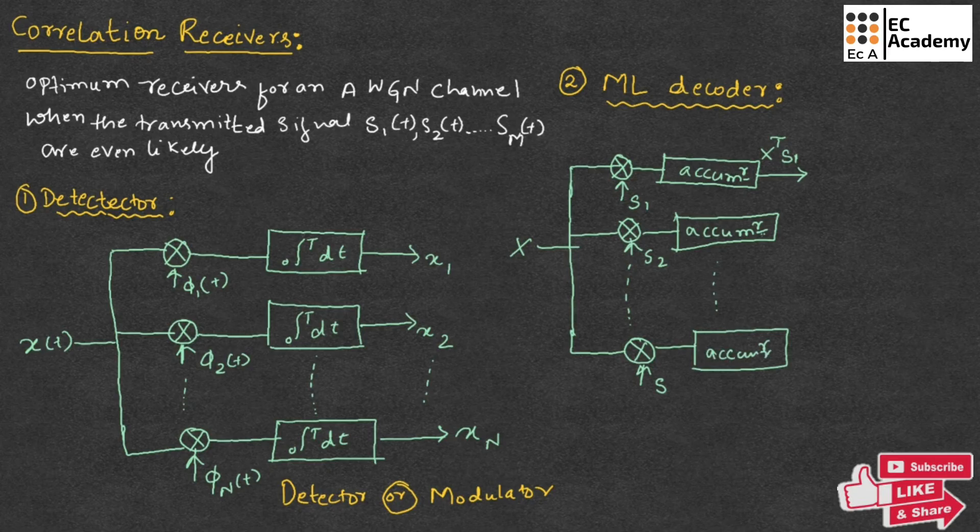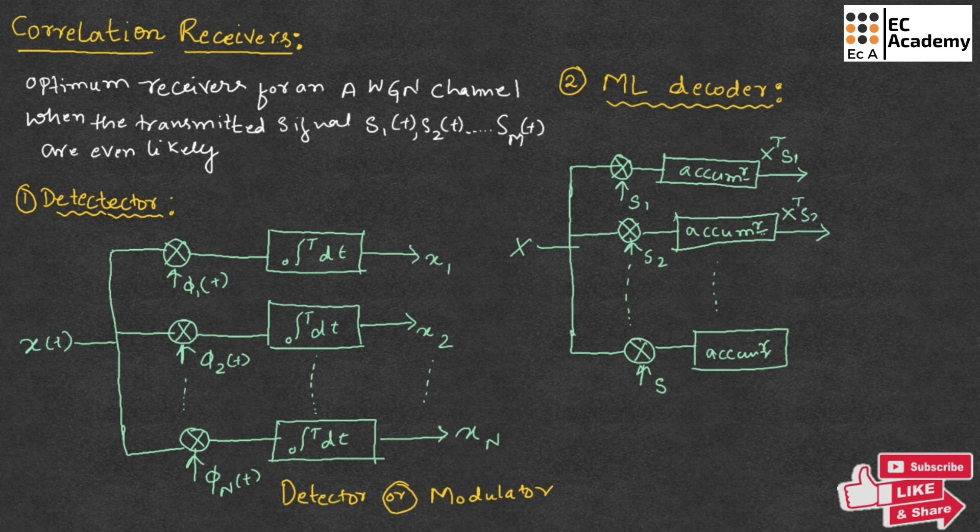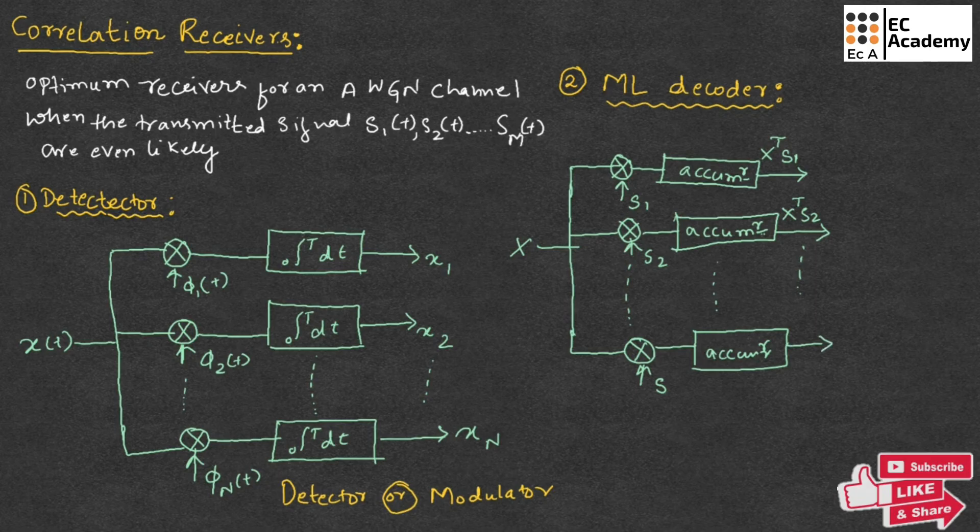So output of second accumulator will be X to the power of T, S2 and so on. Output of the last accumulator will be X to the power of T, S, M.